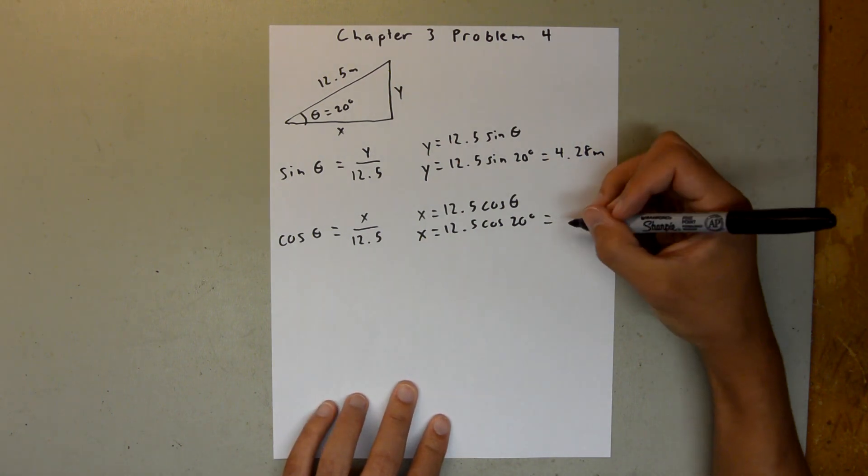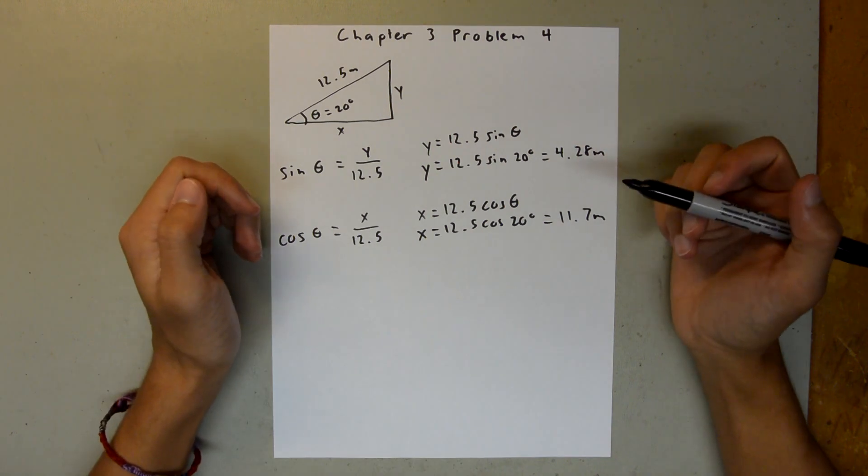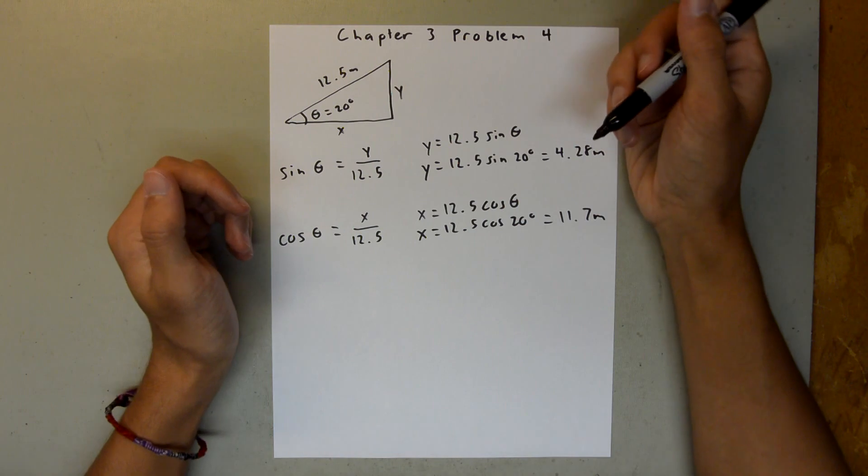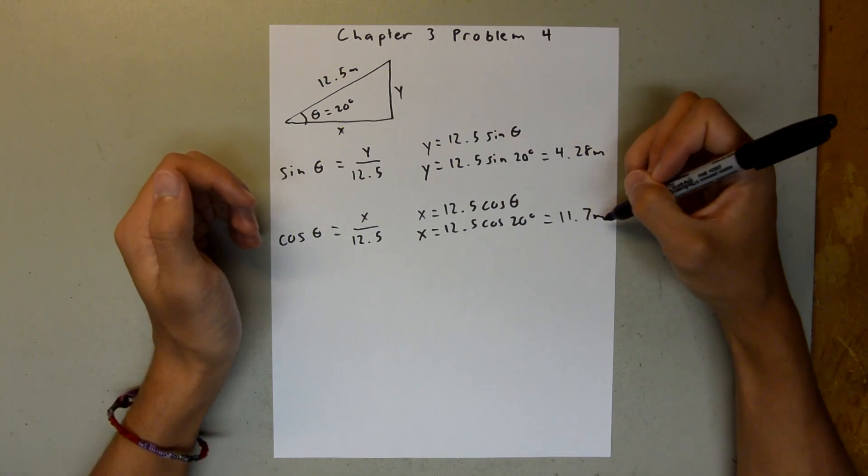And if you plug that in your calculator, you should get 11.7 meters. I actually did the calculation off camera, and if you were to use this 4.28 to solve for x, you would get 11.8 meters for this.